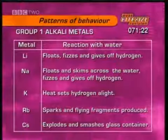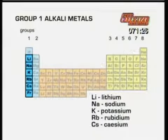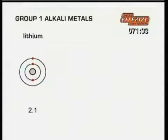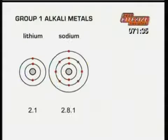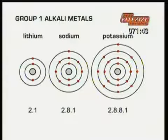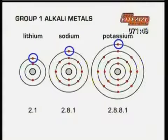Why are they all so reactive? By their position in group 1 of the periodic table, we know they've all got one electron in their outer shell. Lithium has two and one electrons. Sodium has two, eight and one electrons. Potassium has two, eight, eight and one electrons, and so on. In each case, the outer electron is desperate to combine with something else, which is why the alkali metals are so reactive.